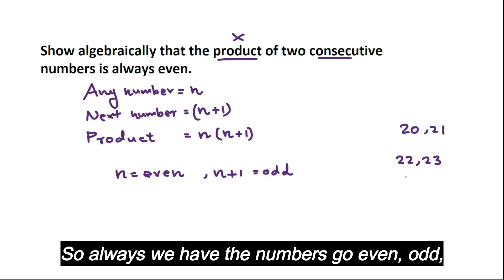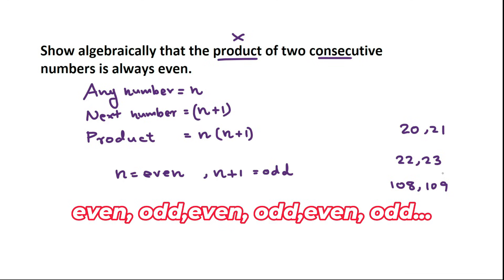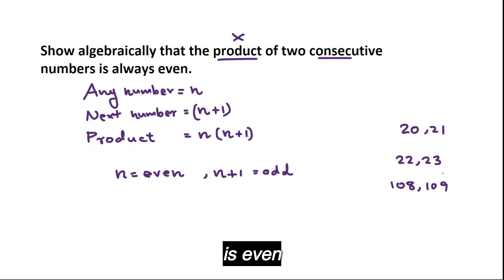So always we have the numbers go even, odd, even, odd, even, odd, like that. So if N is even, N+1 is odd.